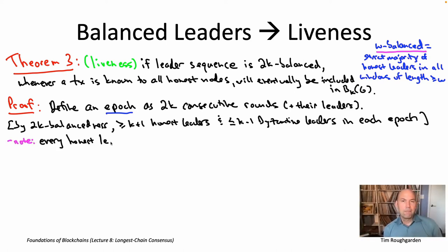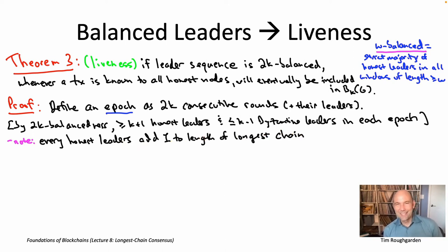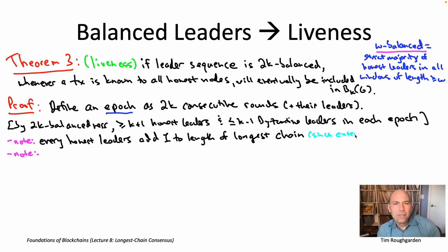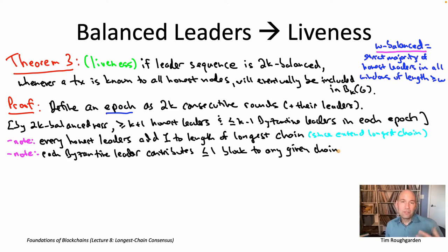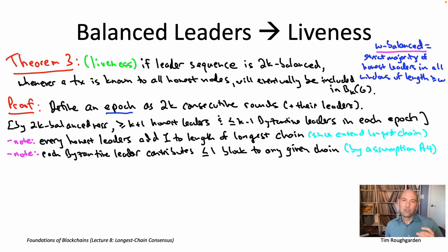Let's proceed to the counting argument. Whenever you have an honest leader, the longest chain gets longer by one, because honest nodes take the longest chain and add a block to the end. For Byzantine leaders, we can rely on assumption A4 — specifically the consequence that Byzantine nodes cannot add more than one block to any given chain. So whatever the longest chain is, any Byzantine leader contributed at most one block to that chain. It may have contributed more blocks to other chains, but to a given longest chain it contributed at most one block.